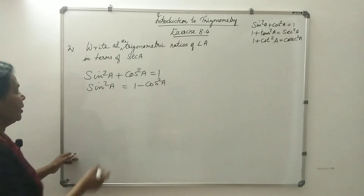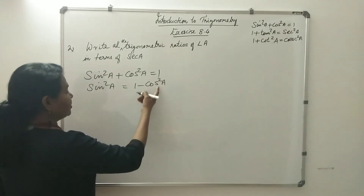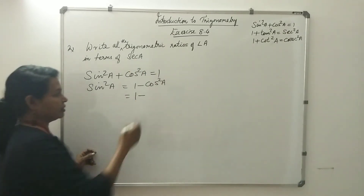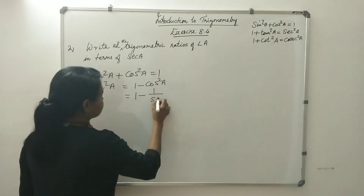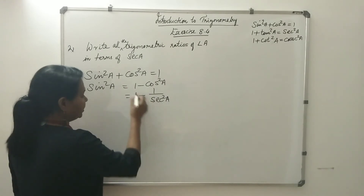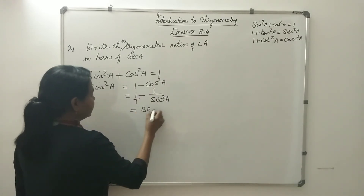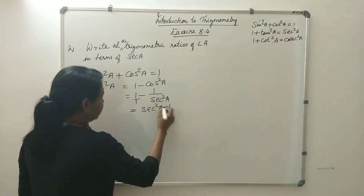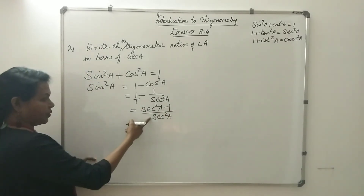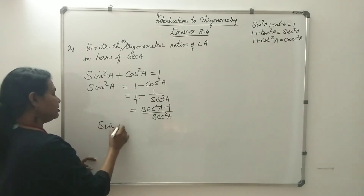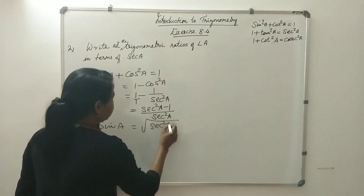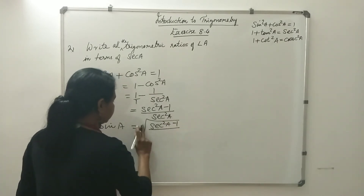Subtracting: sin²A equals (sec²A minus 1) divided by sec²A. So sinA equals the square root of (sec²A minus 1) divided by sec²A, which simplifies to the square root of (sec²A minus 1) divided by secA.